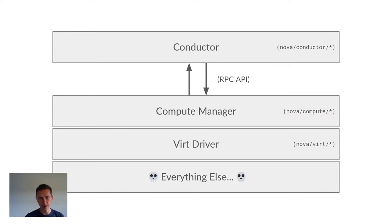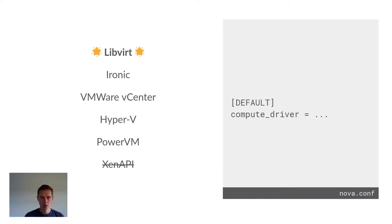You have that compute manager, and that talks to the VRT driver, which is an abstraction of whatever your chosen hypervisor driver may be. Nova comes with a couple of different compute drivers. The LibVirt driver is by far the most widespread, widely used of those drivers. But Ironic, vCenter, and so forth are all fully supported in Train.